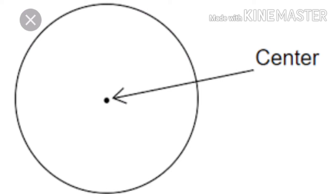The center is a fixed point in the circle. If you look at the circle, every point on it is at an equal distance from the center. All points on the circle are at equal distance from the center. A circle has only one center.